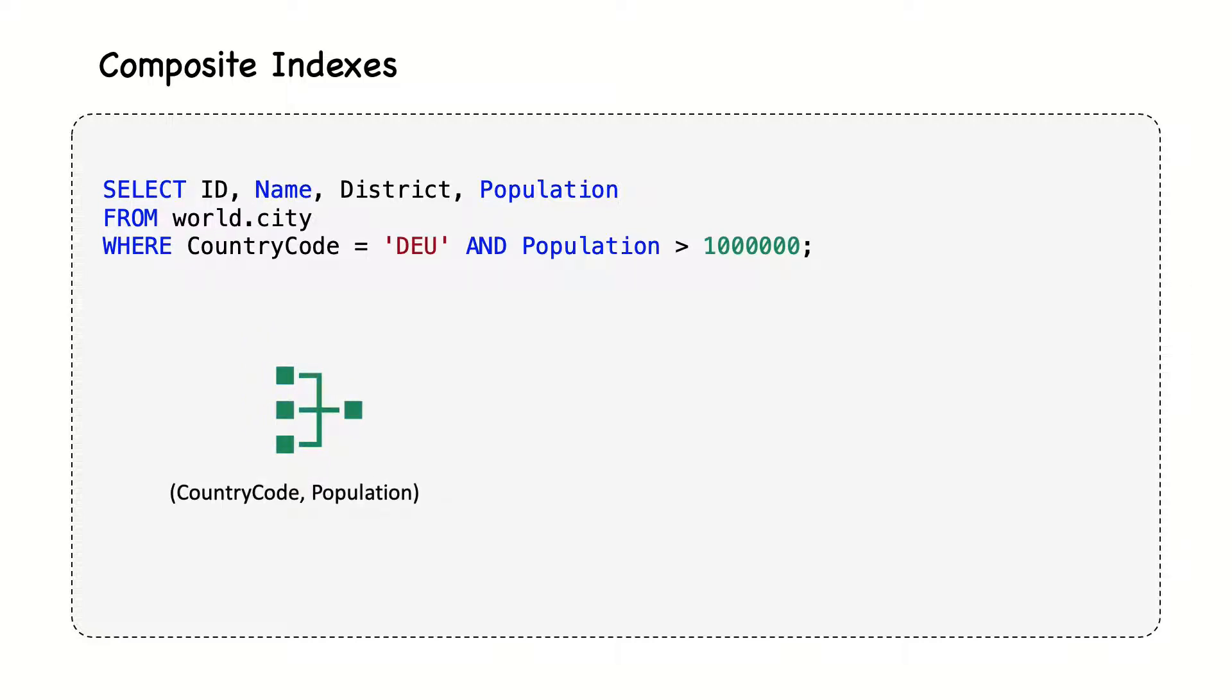Therefore, for this case, it's best to combine it into one index that includes both columns. When the server intersects indexes, usually for AND query conditions, it means that we need a single index with all relevant columns, and not multiple indexes that have to be combined at runtime.